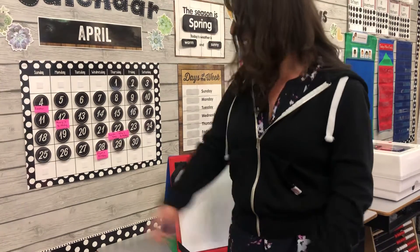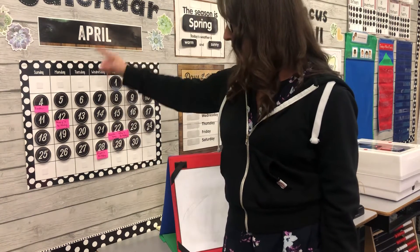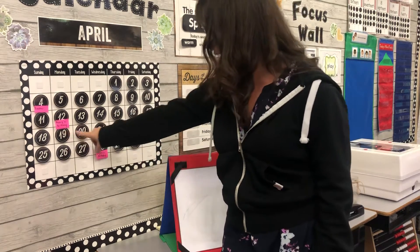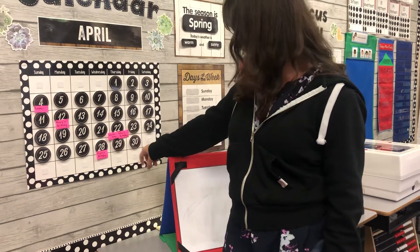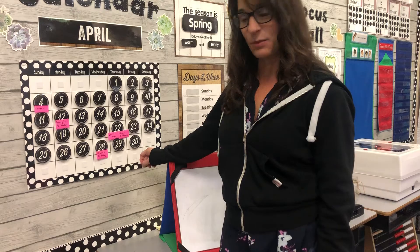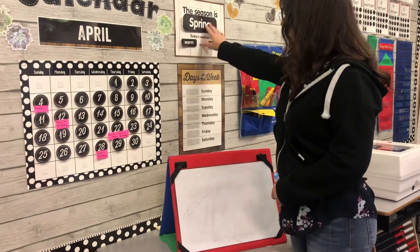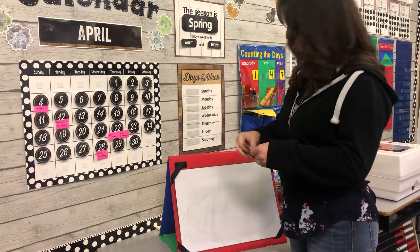Happy Monday! Today is Monday, April 19th, 2021 — that's how you say and write the whole date. This week we have a special day on Thursday: it's going to be Ella's birthday, and it's also Earth Day, so we're going to be doing some fun things this week for Earth Day. The current season is spring — it's been warm and sunny.